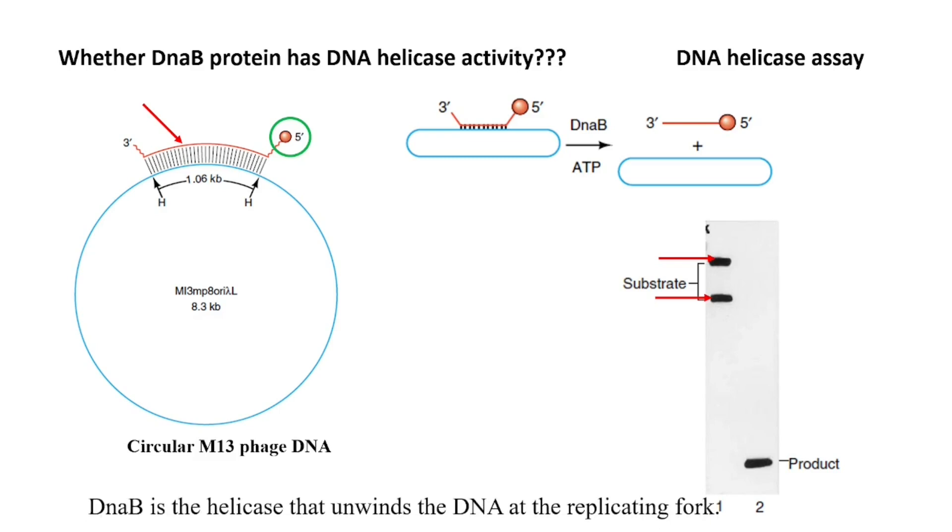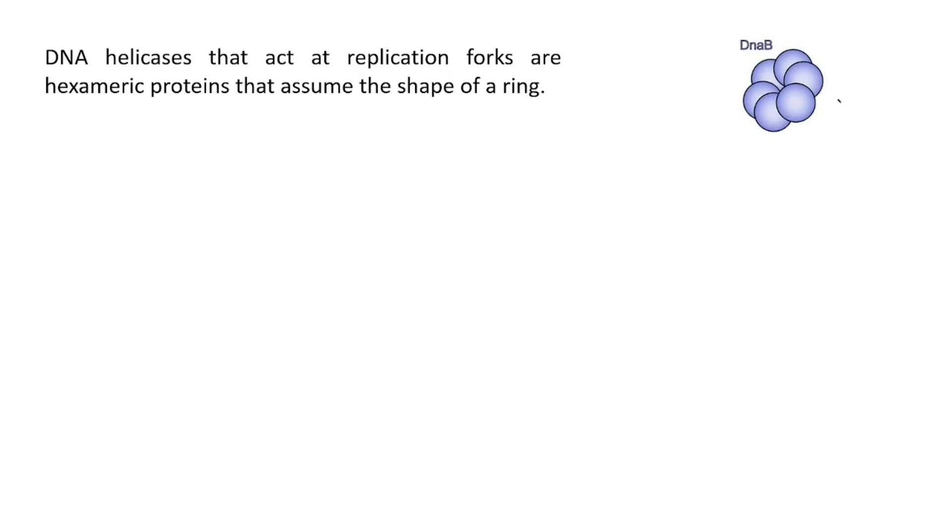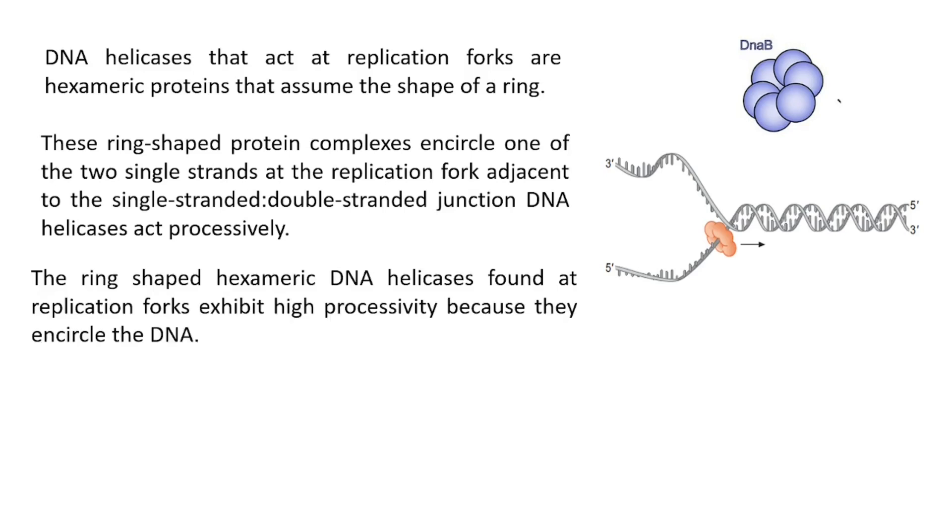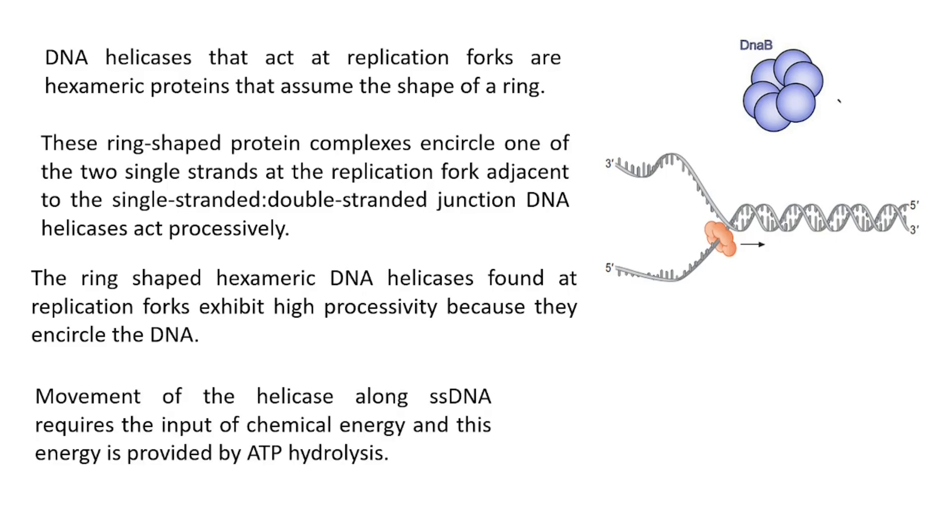DNA B helicase is the helicase that unwinds the DNA at the replication fork. DNA helicases that act at the replication forks are hexameric proteins that assume the shape of a ring. These ring-shaped protein complexes encircle one of the two single strands at the replication fork adjacent to the single-stranded double-stranded junction. DNA helicases act processively. The ring-shaped DNA helicases found at replication forks exhibit high processivity because they encircle the DNA. Movement of the helicase along single-stranded DNA requires the input of chemical energy and this energy is provided by ATP hydrolysis.